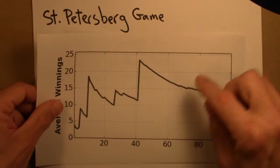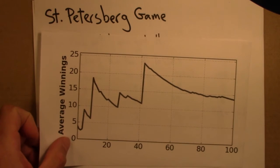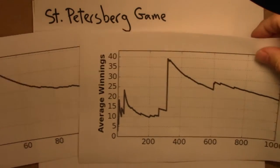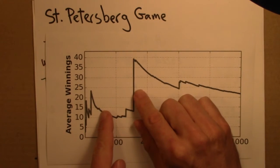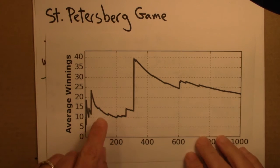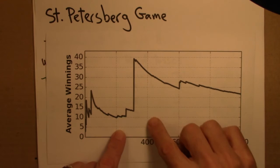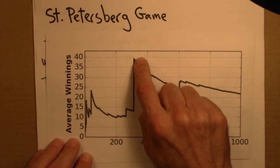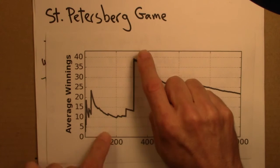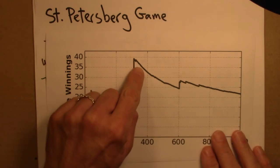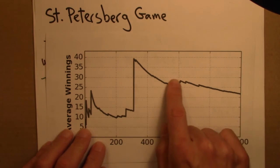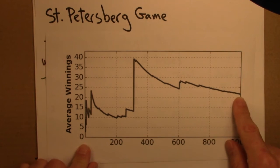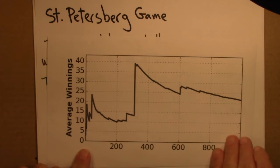Now let's look at this plot going from 1 to 1,000. It slides all the way down to 10. But then something really dramatic happens a little after 300 — a big payoff — and it spikes way up to 40. Then it's sliding down again with occasional jumps up. We wonder what it is going to: maybe it's approaching 20 or 21, maybe it's going to go to 24. Who knows?